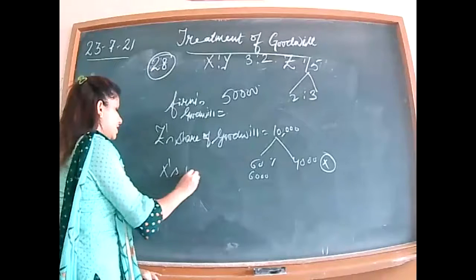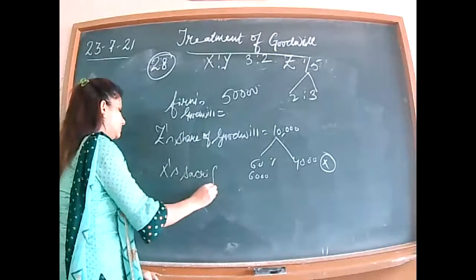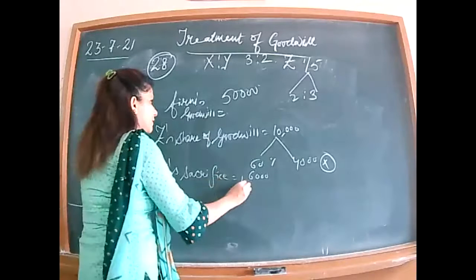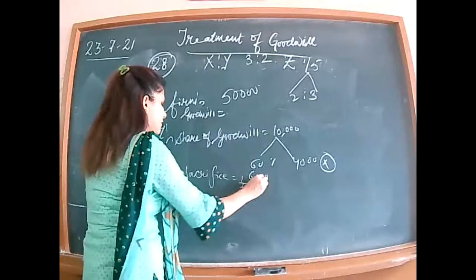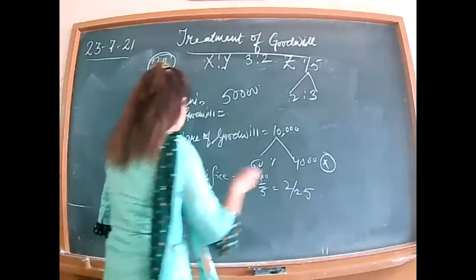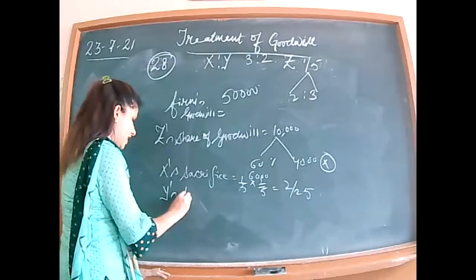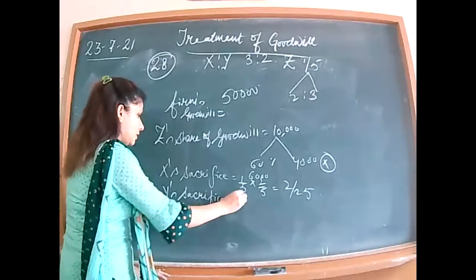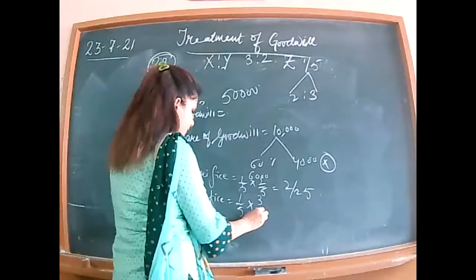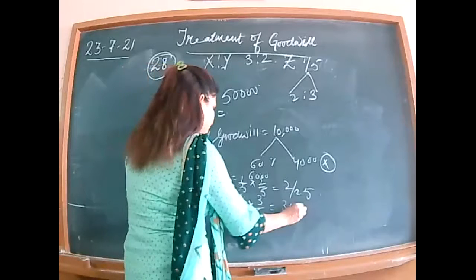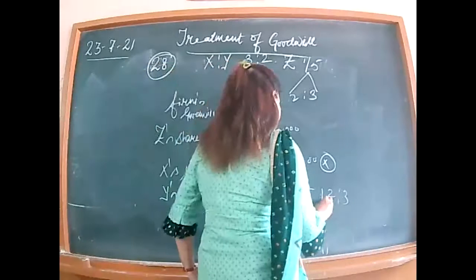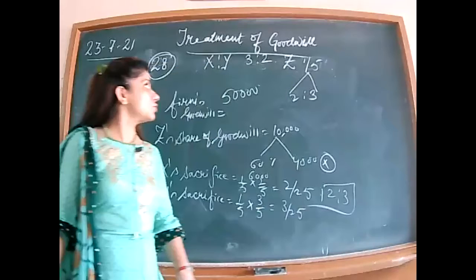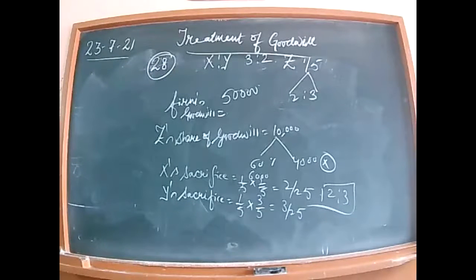X's sacrifice equals 1/5 into 2/5 = 2/25. Y's sacrifice equals 1/5 into 3/5 = 3/25. So their sacrificing ratio is 2 is to 3. Note: the given ratio was 3 is to 2, but the sacrificing ratio comes out to 2 is to 3. Verified with the book.